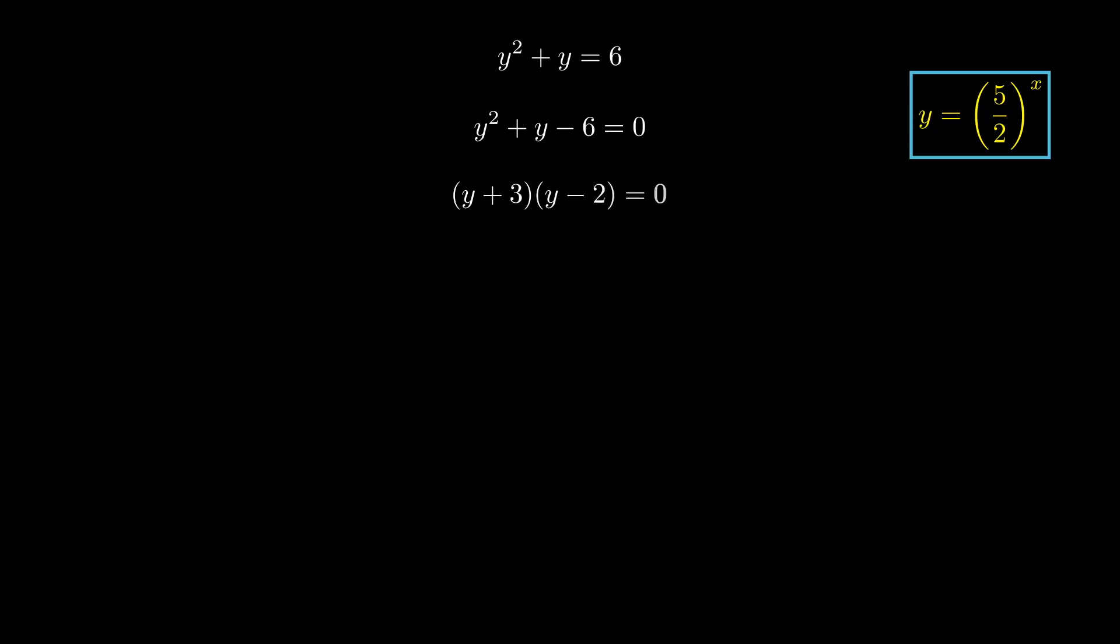Two numbers which multiply to negative 6 that add to positive 1 are plus 3 and minus 2. Now we have a product equaling 0. Either the first term is 0 or the second term is 0, meaning y is negative 3 or y is 2. Remember that we said y was (5/2)^x.